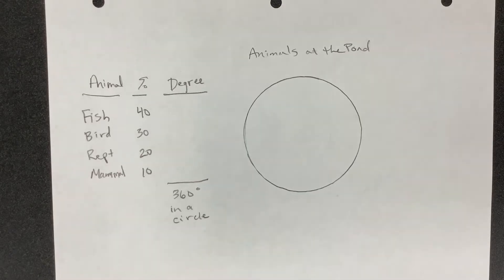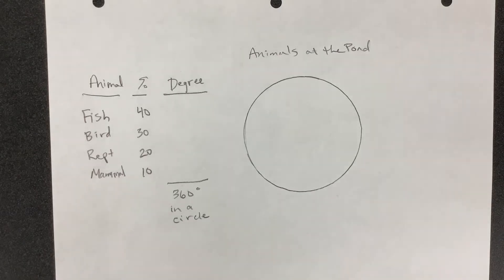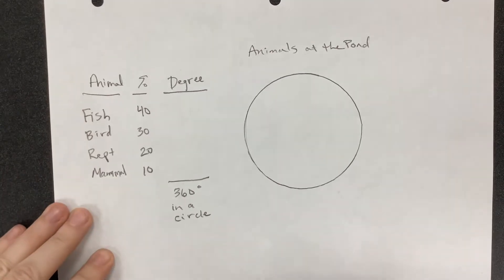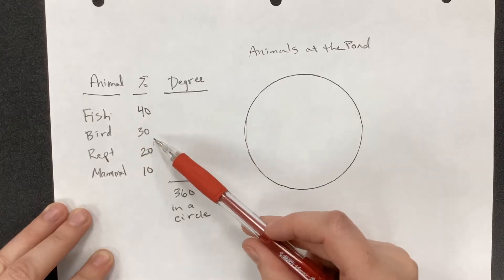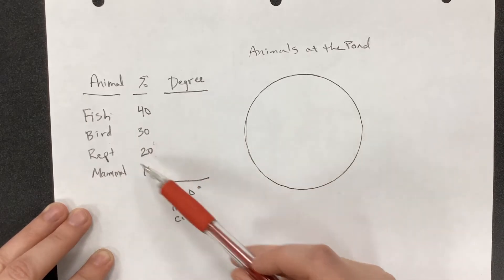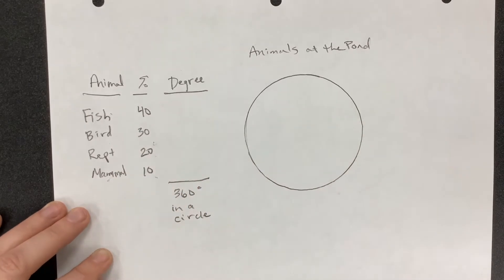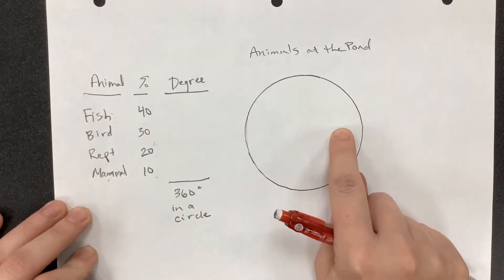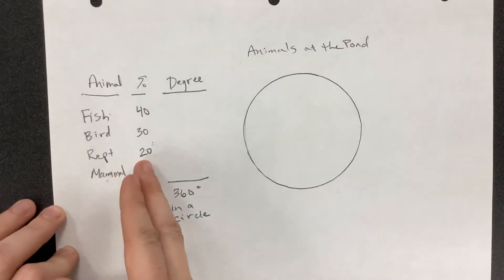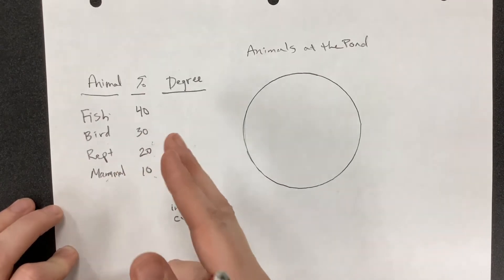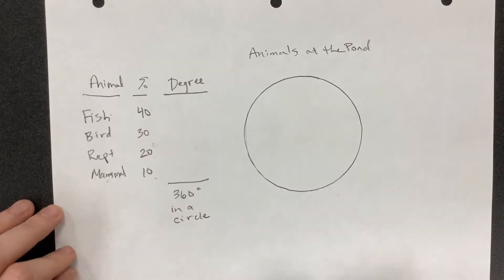Let's assume that you went out to the pond and took data on how many of all the different kinds of animals you saw, and then you calculated the percentage. In this case, 40% of the animals I saw were fish, 30% were birds, 20% were reptiles, and 10% were mammals. To represent that in a pie chart, I would need to convert these percents into degrees and then use the degrees to make the different pieces of pie.